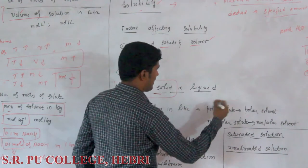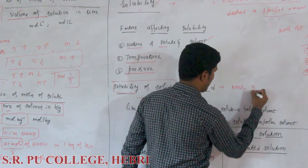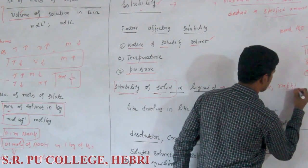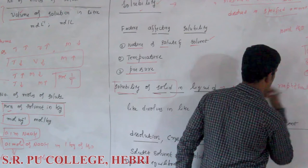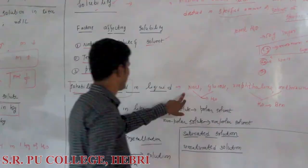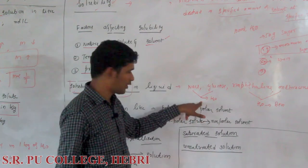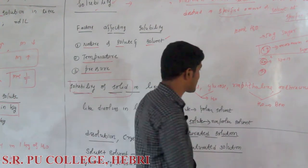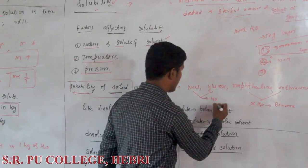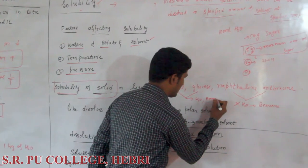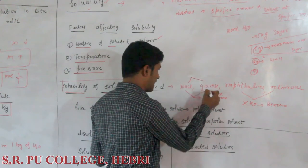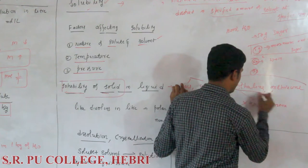Consider some examples: NaCl, glucose, naphthalene, and anthracene. NaCl and glucose are soluble in water, but naphthalene and anthracene are insoluble in water — they are soluble in benzene instead. Sodium chloride and glucose are insoluble in benzene. What is the reason for this?